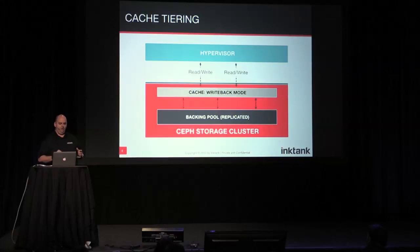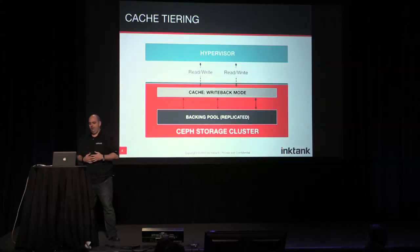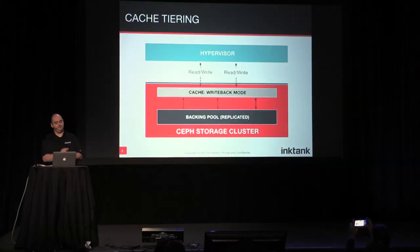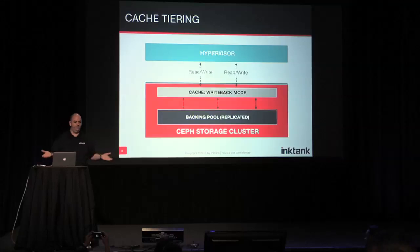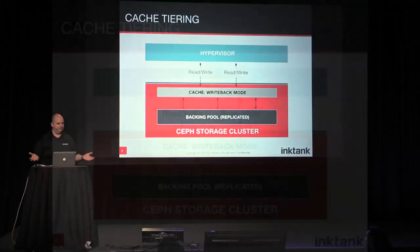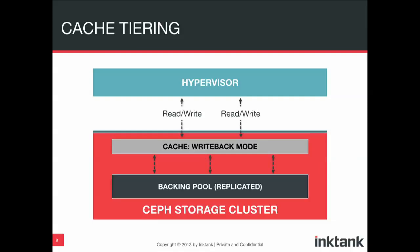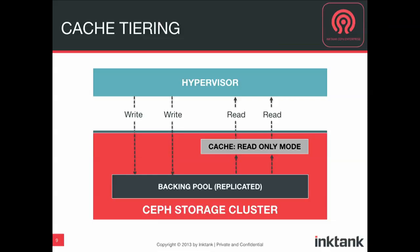Let's talk about tiering. With the Ceph storage cluster, you have the ability to define different pools of storage. The latest version of Ceph allows you to designate one pool as being a cache for another pool, giving you cache tiering. You can have one pool on the bottom which is full of a slower, cheaper, more cost-effective technology, and then a tiering pool above it with solid-state disks that allows you to have a write-back cache that makes reads and writes faster for your hottest data. You can also put this cache into a read-only mode where it will speed up reads, but writes will still go through to the original parent pool.